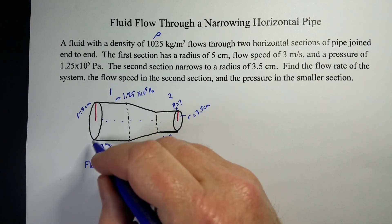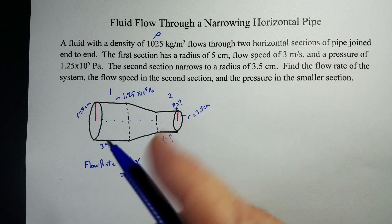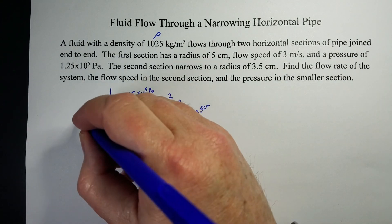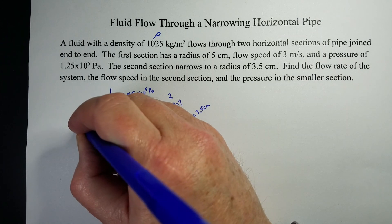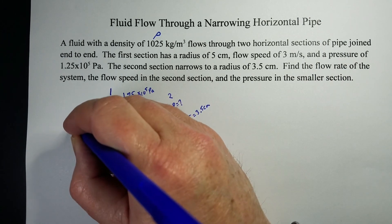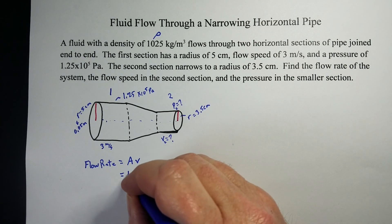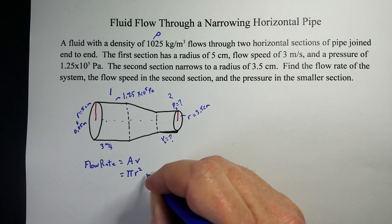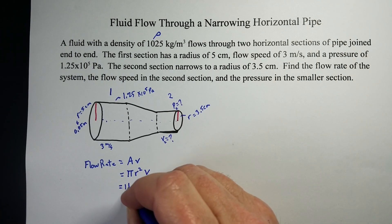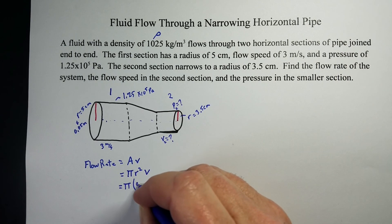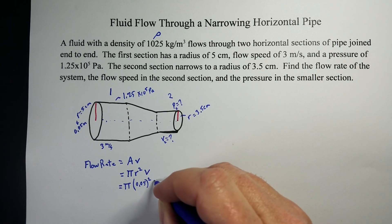Well, this is a circle, and we're going to take the cross-sectional area, which means we're going to cut straight across. And so, that 5 centimeters becomes 0.05 meters, as far as the radius is concerned. And the area of a circle is pi r squared times our velocity. So, pi, the radius is 0.05 squared, and the velocity was 3.